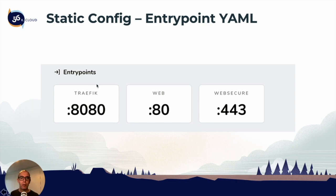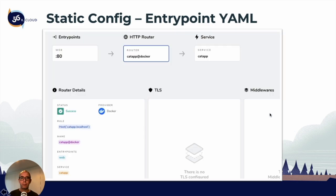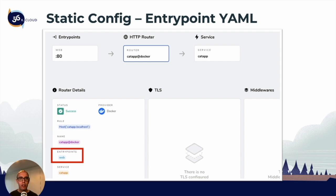Looking at the dashboard now, you can see the entry points — we had three entry points available: the Traefik entry point for the dashboard, web on port 80, and websecure on port 443. I deployed a temporary test service called the cat application. You can see that entry point 'web' on port 80 routes to the router 'cat app' and then to the service 'cat app'. Down here you can see the entry point 'web' being used for this router in detail. As we add more configuration, you'll see the dashboard fill up with more useful information, and eventually we'll get TLS and middlewares assigned to this service as well.